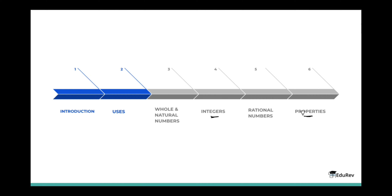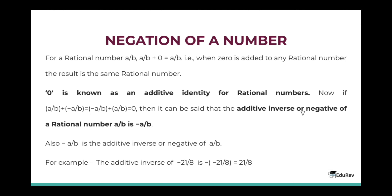We will start with the topic negation of a number. For a rational number a/b, a/b plus 0 equals a/b. That is, when 0 is added to any rational number, the result is the same rational number. Here, 0 is known as the additive identity for rational numbers.